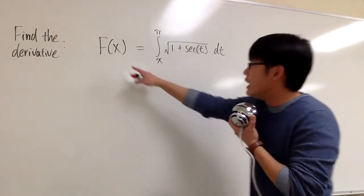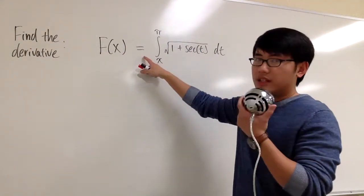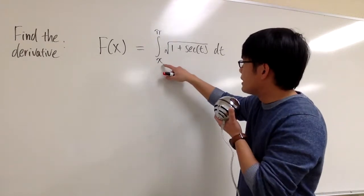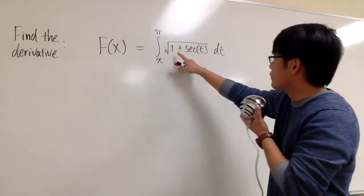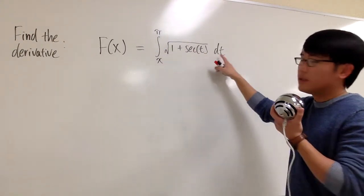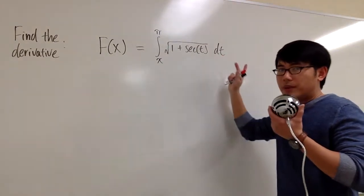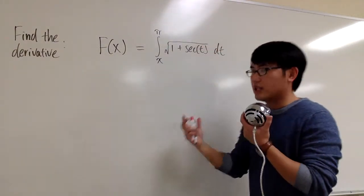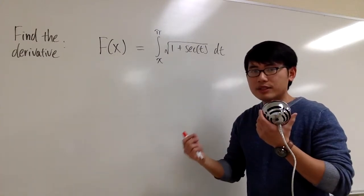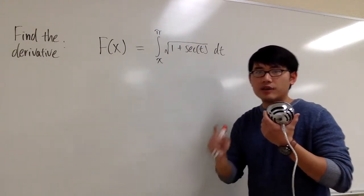Let's find the derivative of the function f of x, which is defined in terms of an integral, the integral from x to π of square root of 1 plus secant t dt. You don't need to worry about how to integrate this part, because when you're trying to find the derivative of an integral, FTC1 says the derivative will cancel out the integral.